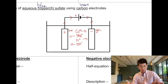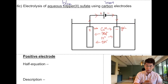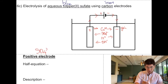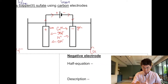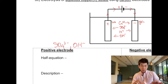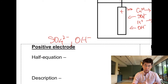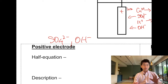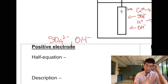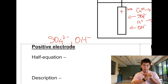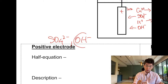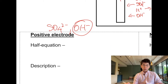At the positive electrode I have both sulfate and OH−. At the negative electrode I have copper 2+ and H+. You must remember that sulfate will not react in electrolysis — never sulfate, and never nitrate. So at the positive electrode, you choose hydroxide.